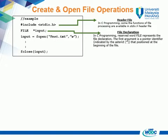Second, the file declaration. In C programming, the reserved word FILE represents the file declaration. The first argument is a pointer identifier indicated by the asterisk, positioned at the beginning of the file.